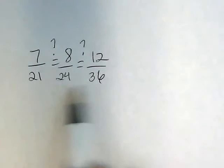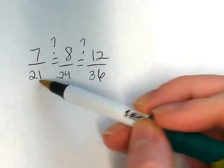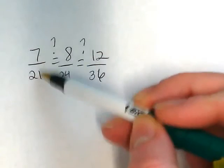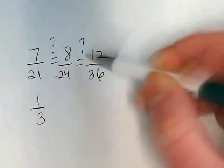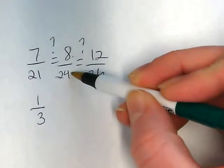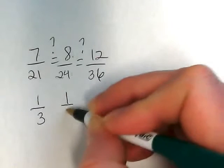We're trying to determine if these three are equivalent to each other. If I reduce these, I can take a 7 out of both 7 and 21, and that reduces to 1/3. I can take an 8 out of both 8 and 24, and it reduces to 1/3.